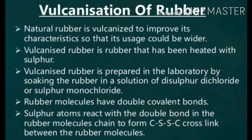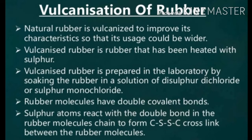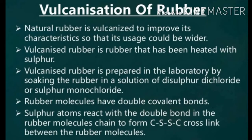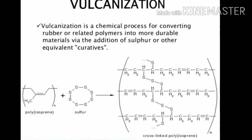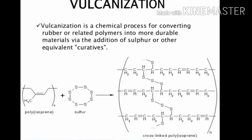The rubber molecules have double covalent bonds in the rubber molecule chain, which form C-S-S-C crosslinks between the rubber molecules. In the next slide you will see the structure. Vulcanization is a chemical process for converting rubber or related polymers into more durable materials via the addition of sulfur and other equivalents.